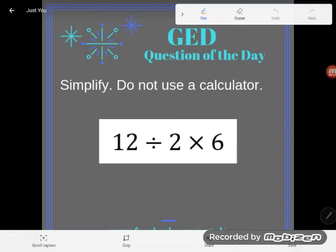Hey GED students, it's GED question of the day time. I wanted to do this fairly easy order of operations problem because even though it's simple, only two operations, division and multiplication here, it is complex for a lot of students who don't understand the order of operations. In fact, this is one of the most commonly mistaken or messed up problems when it comes to that topic.